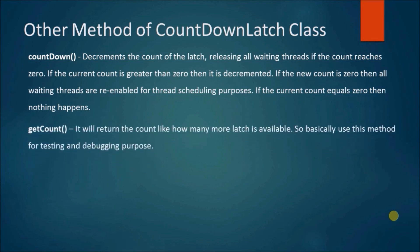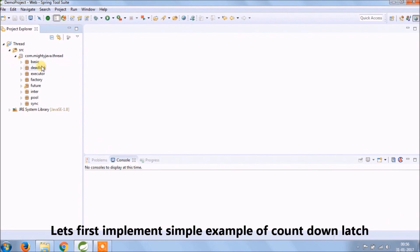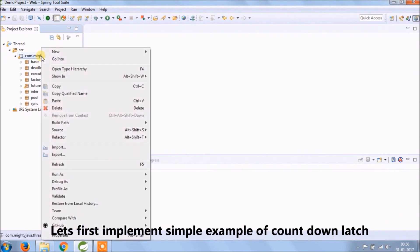The getCount method returns the count — how many more latches are available. Basically use this method for testing and debugging purposes. Let's implement a simple example of countdown latch.